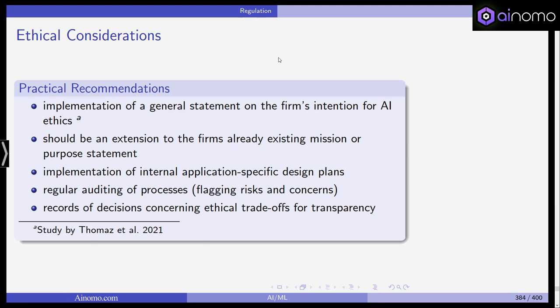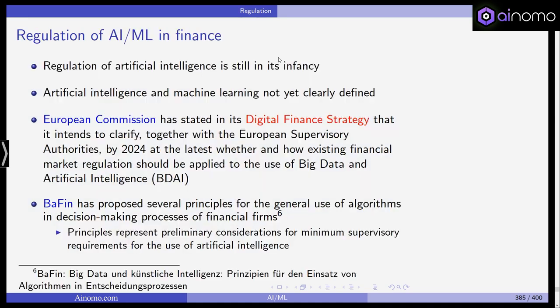How are artificial intelligence and ML regulated, especially from an ethical perspective? Well, actually this is quite in its infancy — AI and machine learning have not yet even been clearly defined. The European Commission has stated in its digital finance strategy that it intends to clarify, together with the European supervisory authorities by 2024 at the latest, whether and how existing financial market regulation should be applied to the use of big data and artificial intelligence. BaFin has proposed several principles for the general use of algorithms in decision-making processes of financial firms.